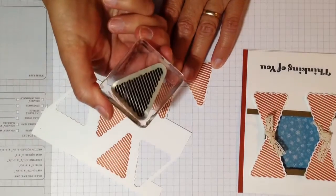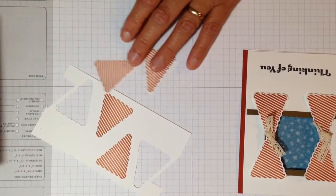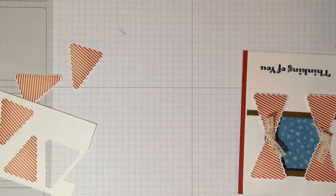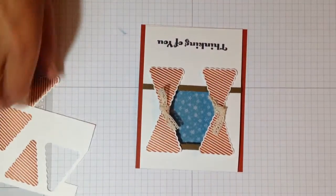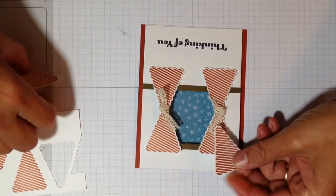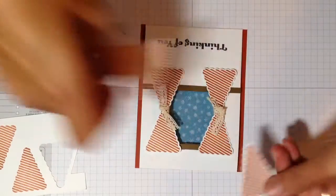So I stamped this particular stamp and then used the Petite Builders Pennant Punch, and you can see that's how I did the curtains, and then I just wrapped them around with a little lace.